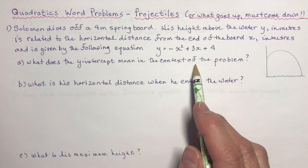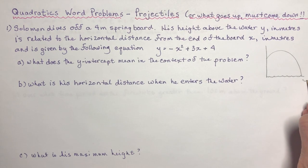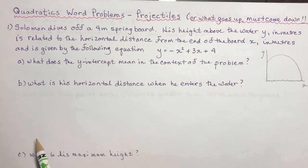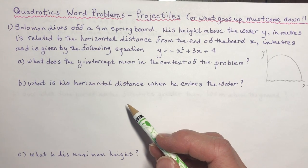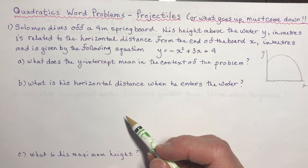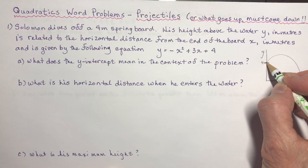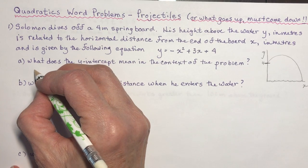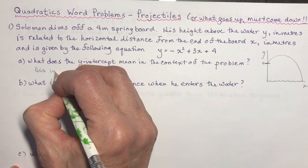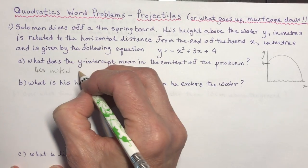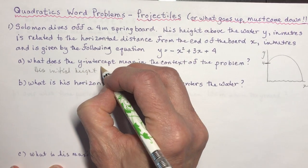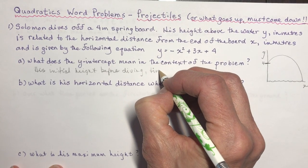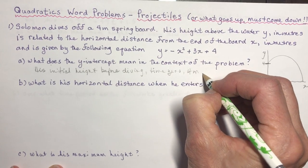What does the y-intercept mean in the context of the problem? Remember, x is on this axis and y here. If we put in zero for x, we get four, and we know he's on a four meter springboard. So the y-intercept represents his initial height before diving - because he's on a four meter board. What does it mean in context? You're not going to say it is four. You're going to say this is his initial height before diving - where he was at time zero.